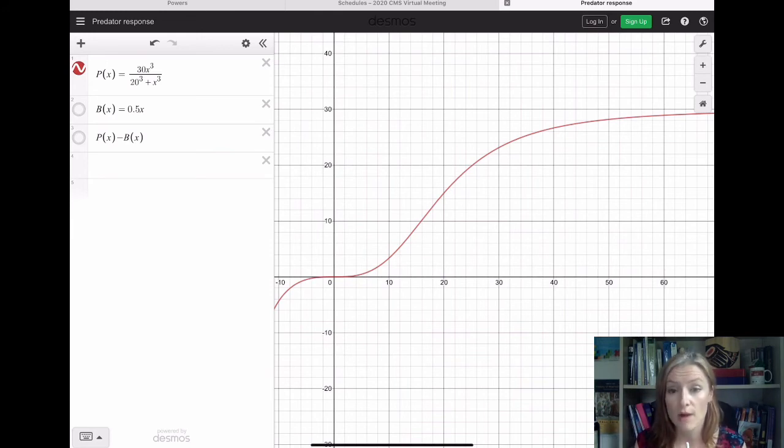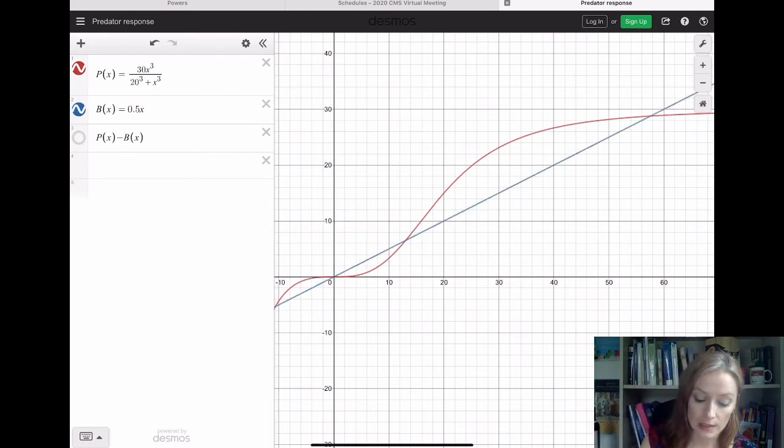Just looking at the graph, you can see the cubic, snaky behavior near the origin, and then the plateau to 30 for the large values of x. And let's say this is my birth reproduction,